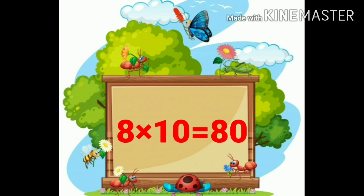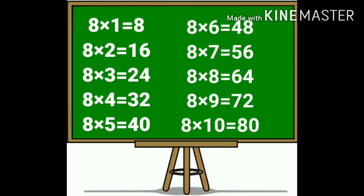So let's start. Eight ones are 8. Eight twos are 16. Eight threes are 24. Eight fours are 32. Eight fives are 40. Eight sixes are 48. Eight sevens are 56. Eight eights are 64. Eight nines are 72. Eight tens are 80.